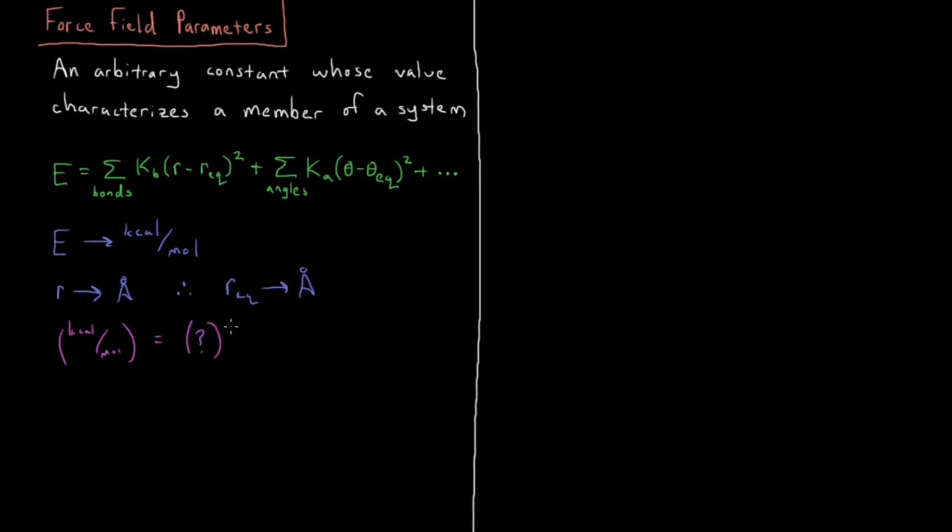So we have kcal per mole equals a sum where we have something in unknown units times angstroms. Angstrom minus angstrom gives you angstrom, then you square that so you get angstrom squared. We have to cancel out this angstrom squared and get kilocalorie per mole. So that implies that a good choice for our units of Kb should be kilocalorie per mole per angstrom squared.